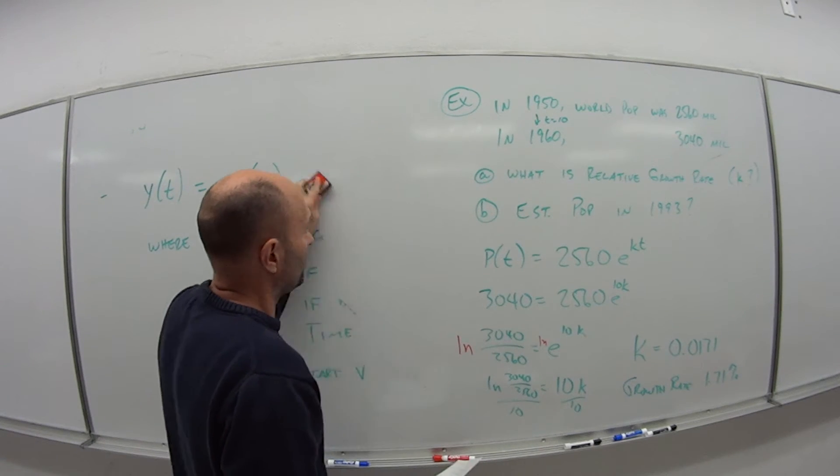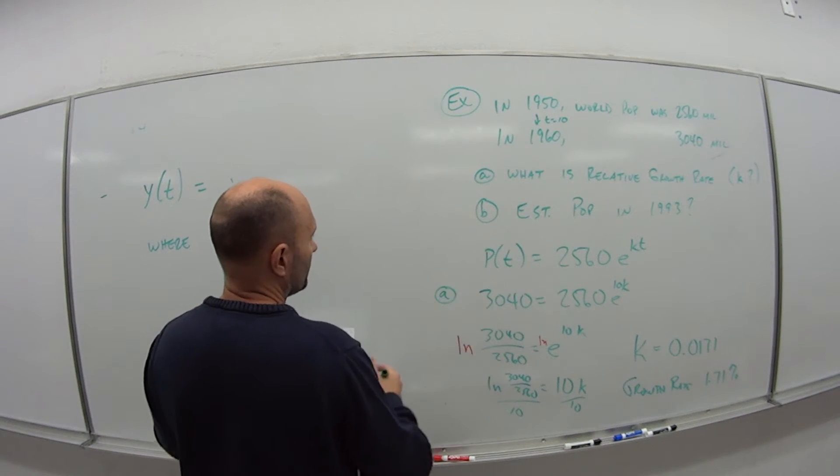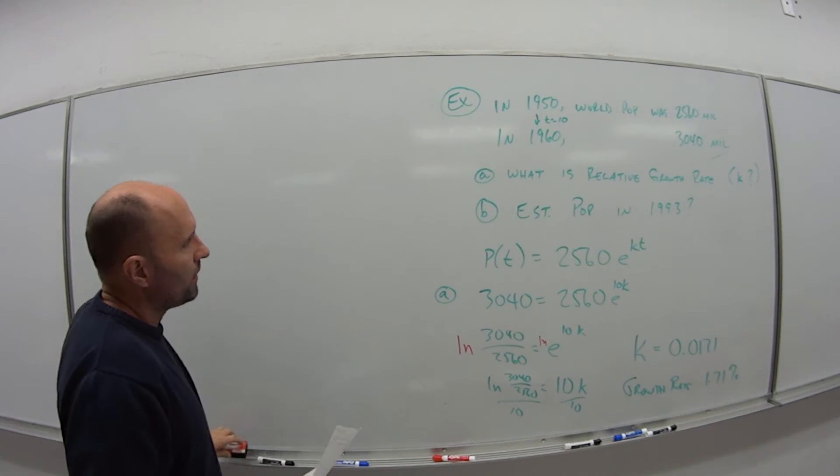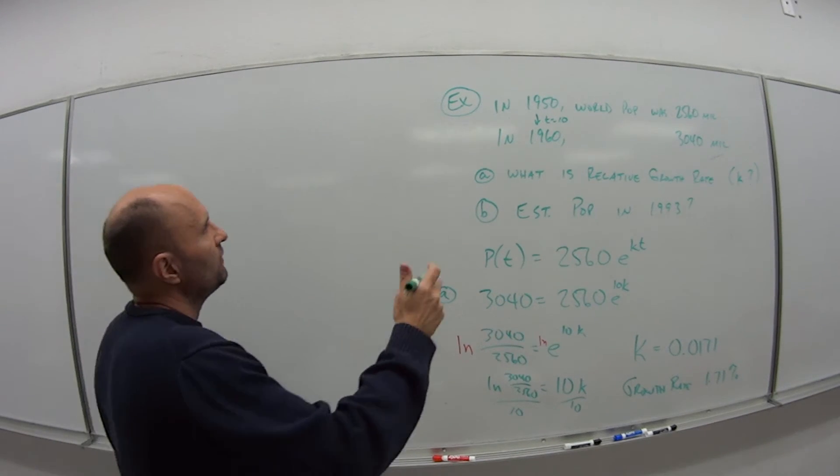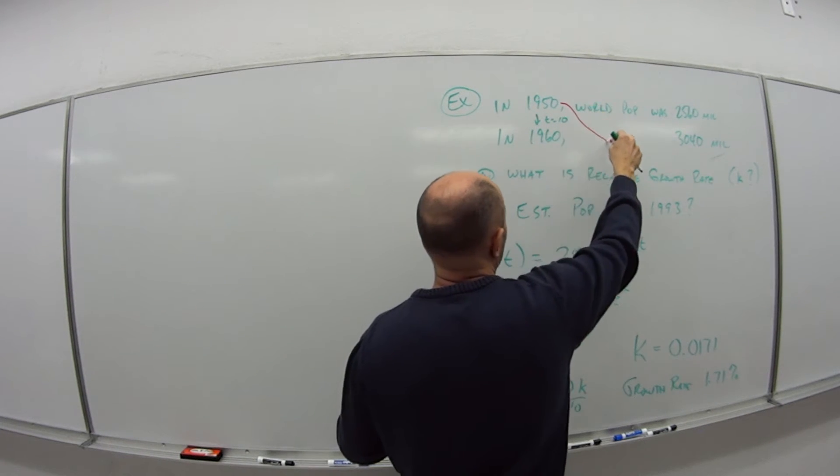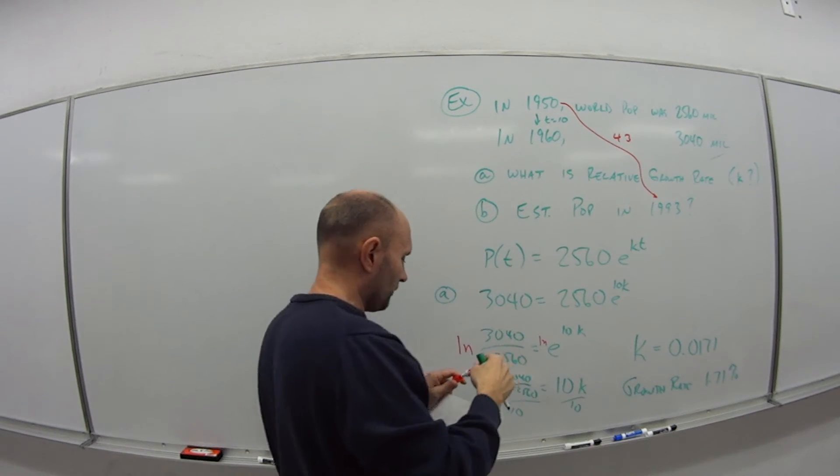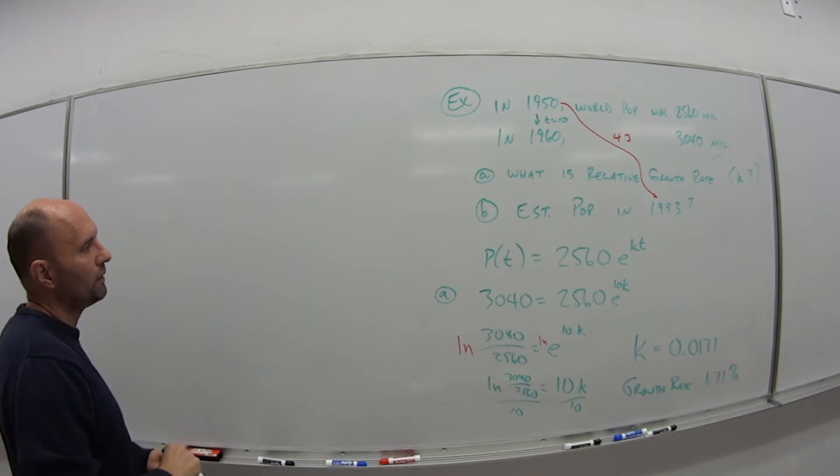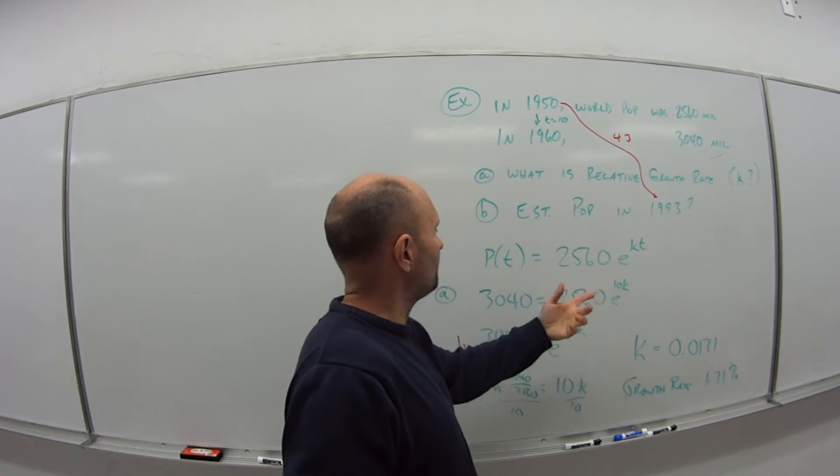Now, the second question, part B. Part B, I want to estimate what's the population going to be in 1993. So that means what? From the original 1950 down to 1993 was how many years? That was 43 years. So I already know my k, 0.0171. The only thing I don't know now is my t, which I know it. It's 43.